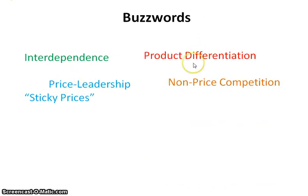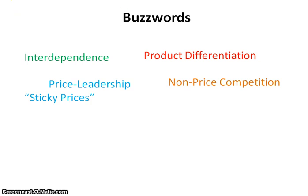What these firms do in oligopolies is they have some type of product differentiation as a way to compete outside of these sticky prices. Advertising is really expensive for oligopolies and that's their major form of non-price competition. This makes the freedom of entry and exit really difficult because this is a big barrier to entry — people tend to know these firms, so if you want to break into this industry, you have to really advertise a lot in order to get your name out there.